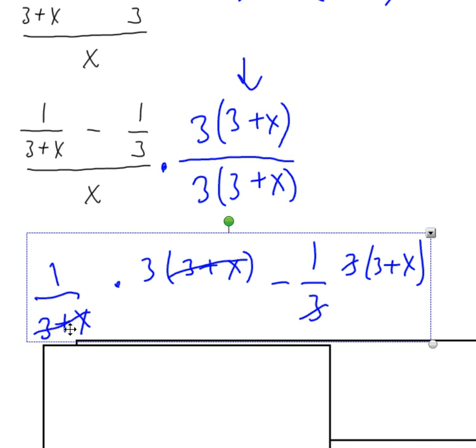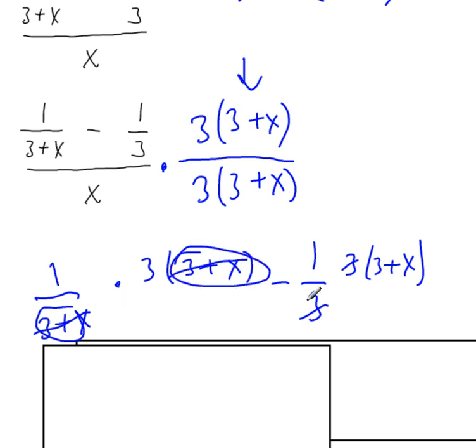And what happens for the first one is, you see it, that three plus x factors out cancels off, right? And then in the second term, the threes cancel off.